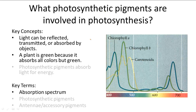An absorption spectrum refers to a chart like this. Down on the bottom, all the colors are shown, and the pigments are graphed out in peaks and valleys. The higher the peak, the more of that color is being absorbed from that particular part of the visible light spectrum. For example, chlorophyll B absorbs a lot of violet and indigo.